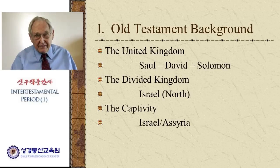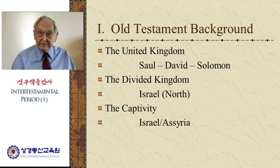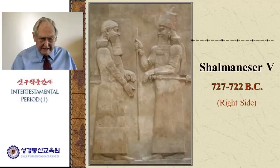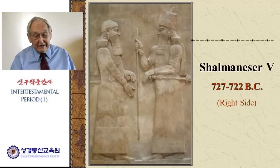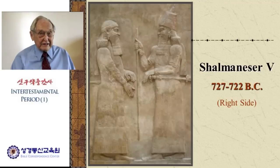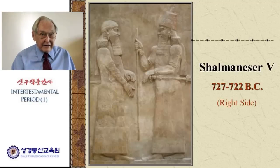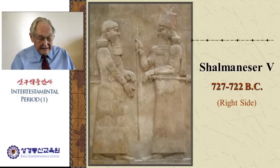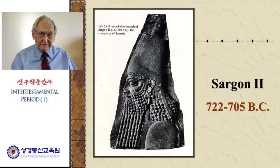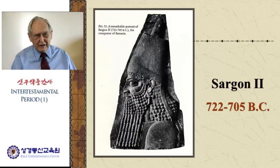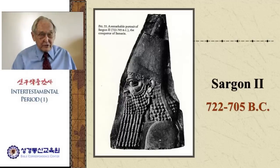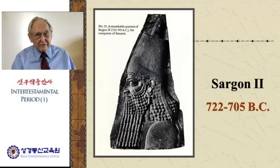It was in 722 BC that the northern kingdom of Israel went into captivity to the people of Assyria. A man by the name of Shalmaneser V was the king of Assyria at this time. In 722, he led his army into the area of Palestine, laid siege to Samaria, the capital of the northern kingdom of Israel, and captured that kingdom.